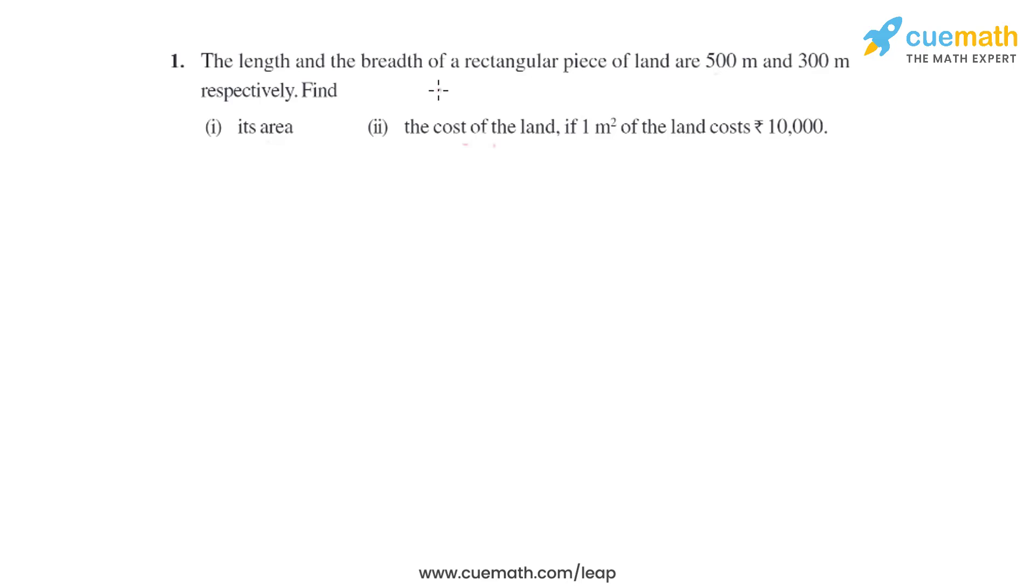Question one of this exercise says the length and the breadth of a rectangular piece of land are 500 meters and 300 meters respectively. We have to find two things: first, its area, and second, the cost of the land if one square meter costs 10,000 rupees.